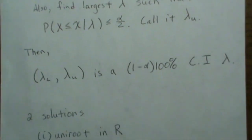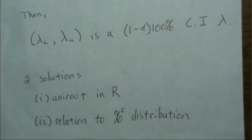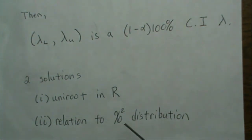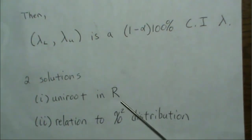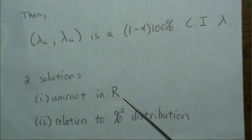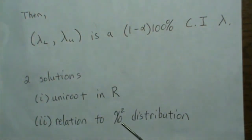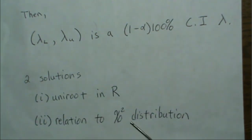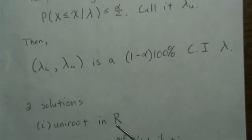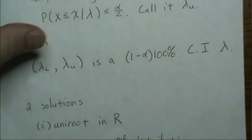It's the exact same approach, and that's what we're going to use in the Poisson process. There are two approaches: one uses UniRoot in R, which is pretty intriguing, and the other uses a relationship between Poisson sums and the chi-square distribution.